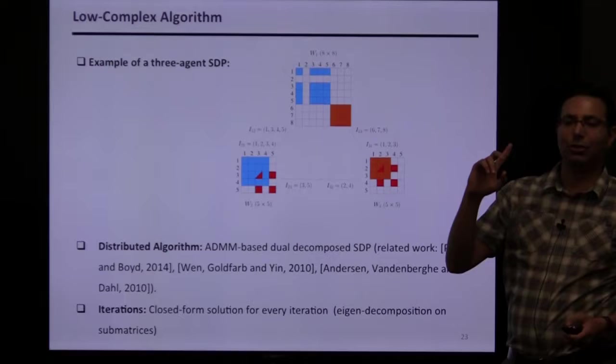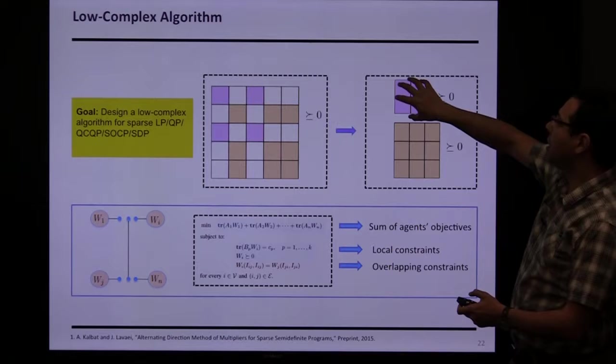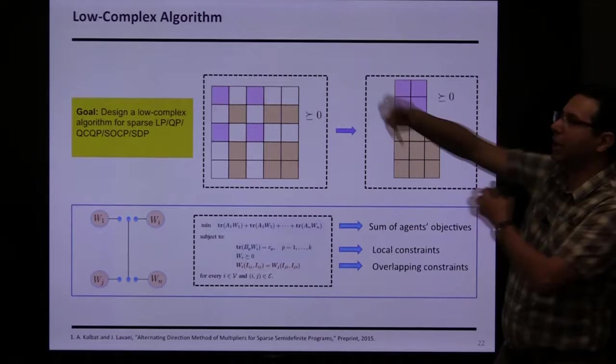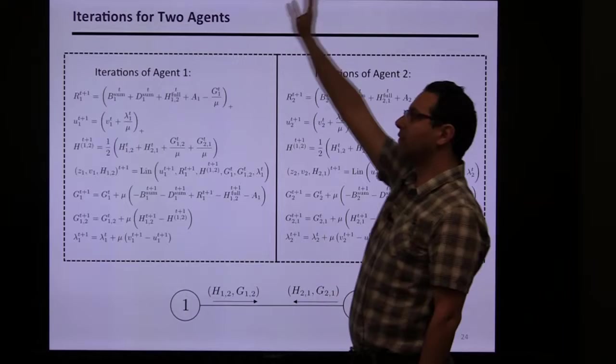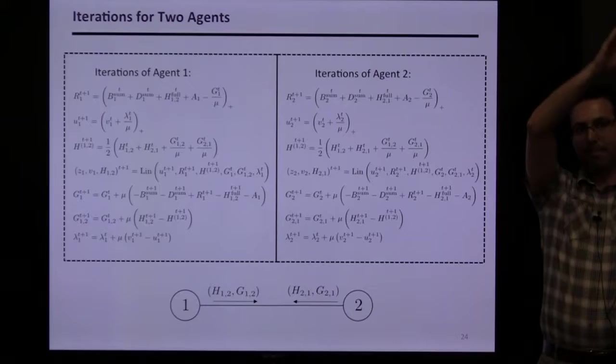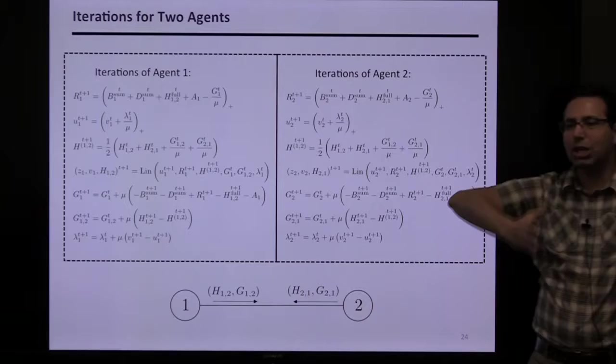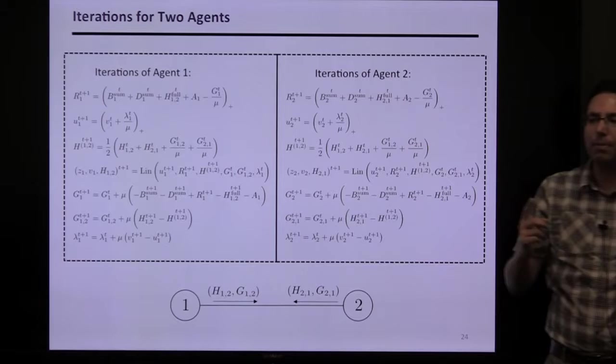We came up with a strategy: at each node, computation is a closed-form solution — just eigenvalue decomposition of a sub-matrix of that node's size. If the treewidth is 27, I only need to do eigenvalue decomposition of a 27×27 sub-matrix at each node, then communicate with neighbors. This breaks down the complexity completely. We have nodes doing eigenvalue decomposition of small matrices and communicating with neighbors — that's all.